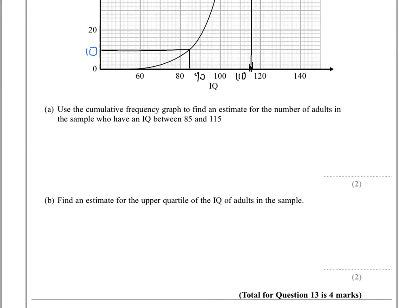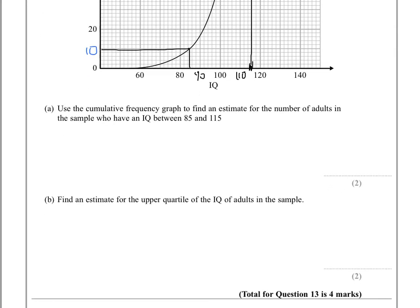What that means is that the number of adults who had an IQ between 85 and 115 is 80 minus 10, because that's where we've landed with each of those, and that gives us an answer of 70.